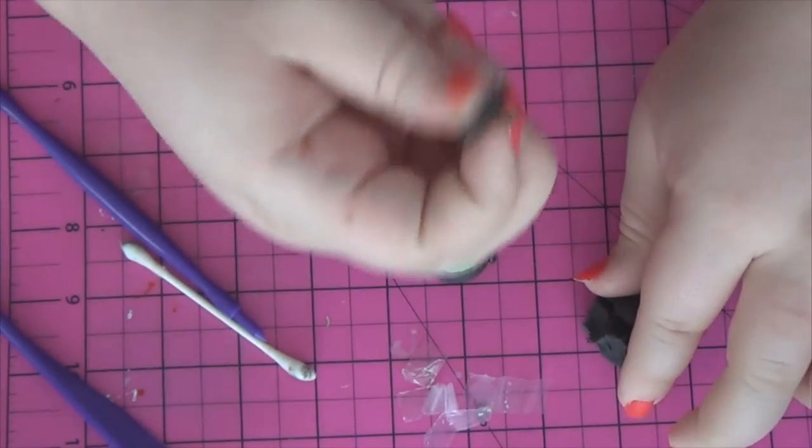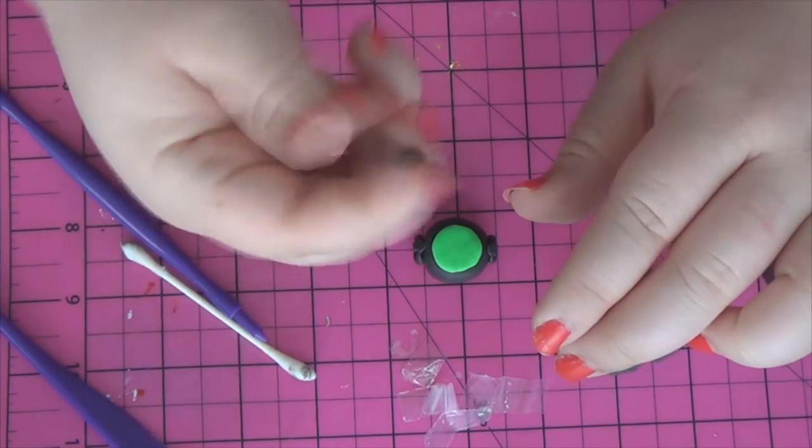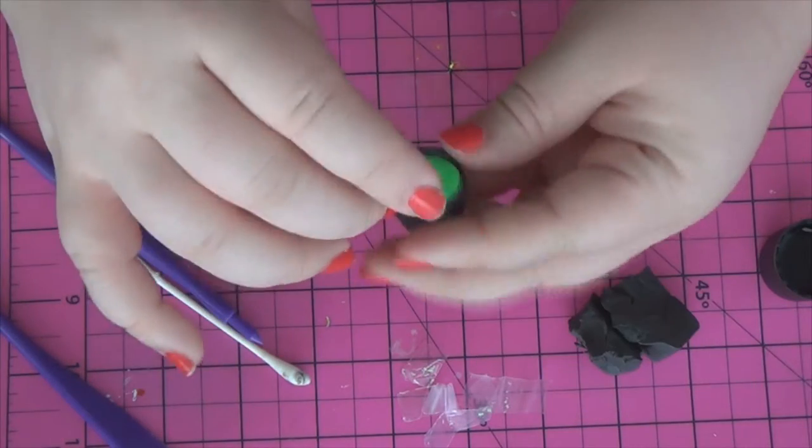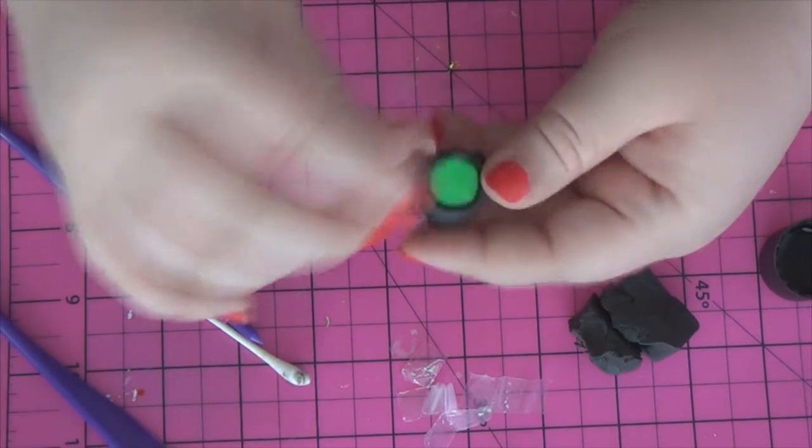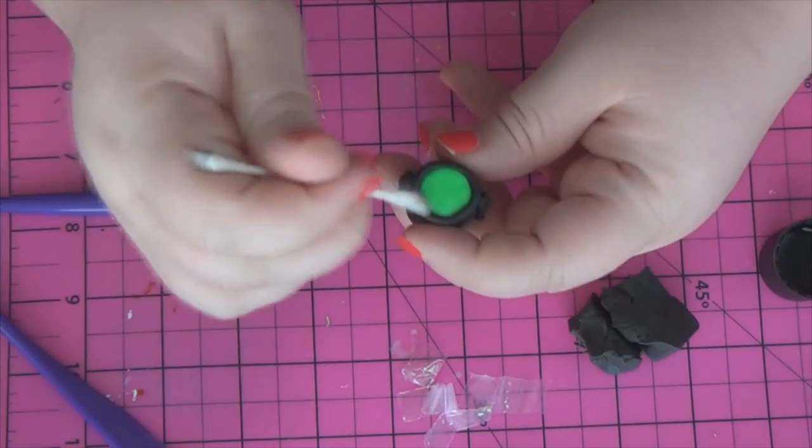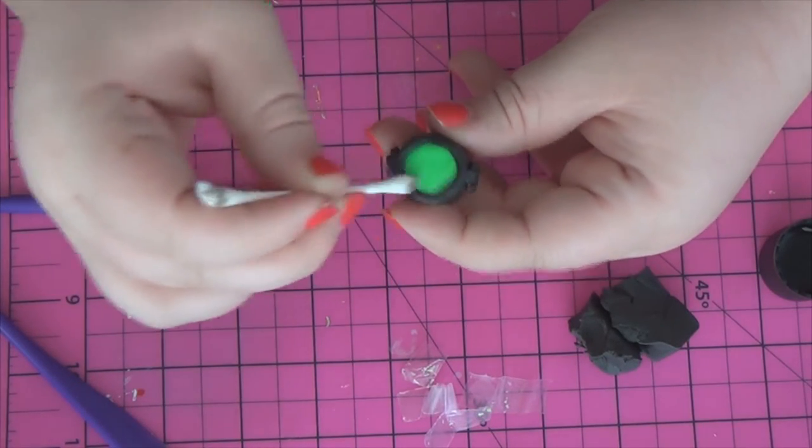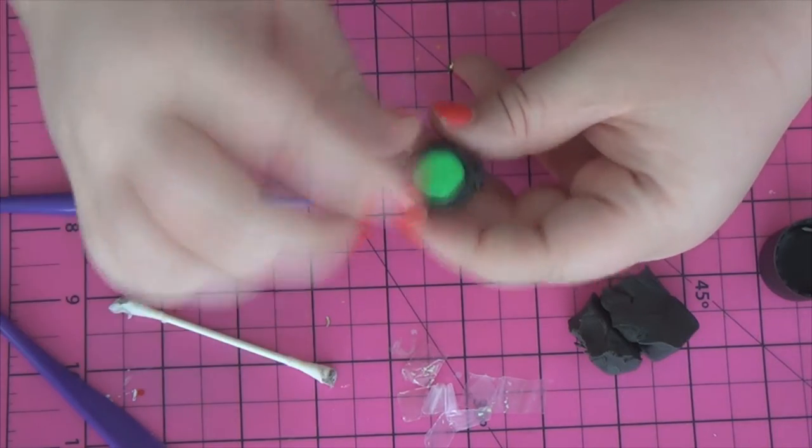And then I took another piece of black and I rolled it into another snake. And I used that to kind of pull the edges of my little cauldron here. And then I blended those pieces in together. And I used that q-tip again to help blend those pieces because I find that seems to help me out quite a bit.